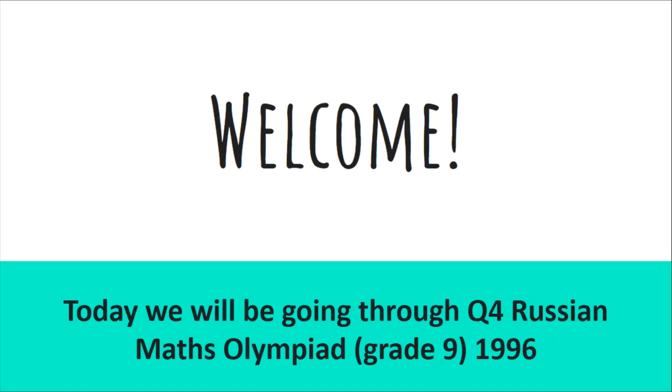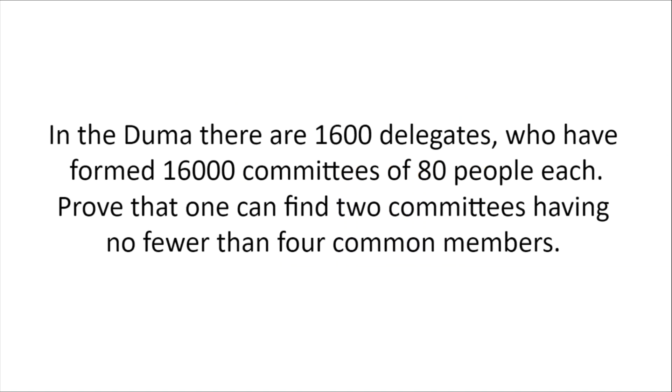Welcome! Today we'll be going through question 4 from the Russian Math Olympiad 1996. In the Duma there are 1600 delegates who have formed 16,000 committees of 80 people each. Prove that one can find two committees having no fewer than four common members.